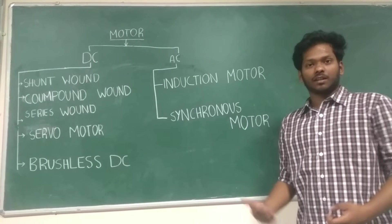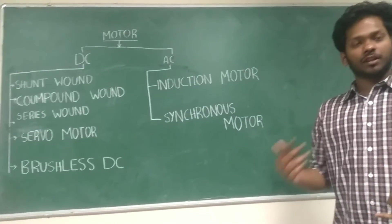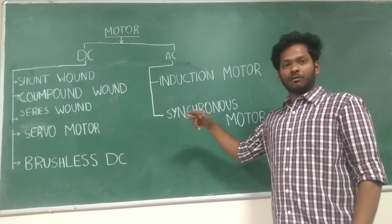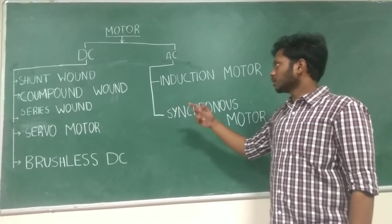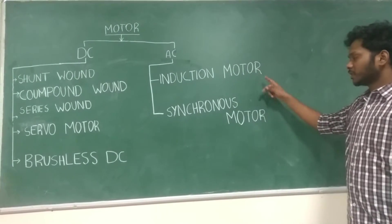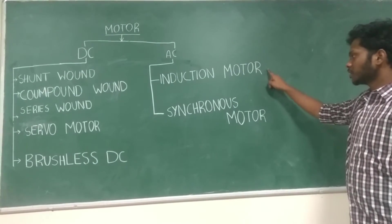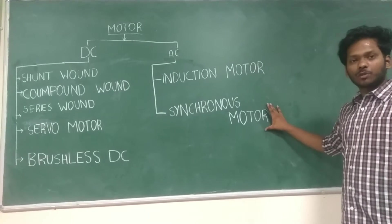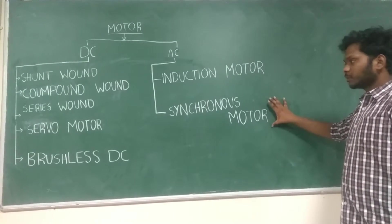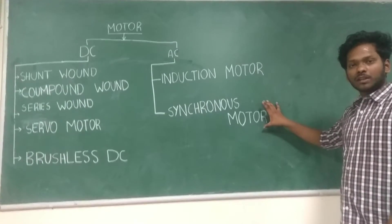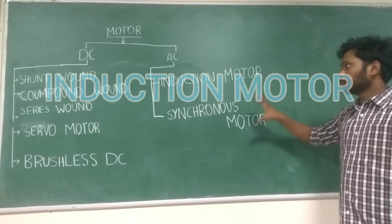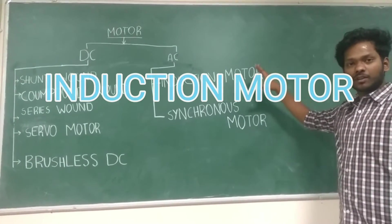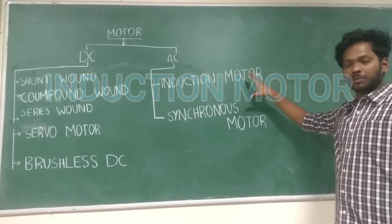We have seen the BLDC motor in DC. Now we will discuss the two types of AC motor. There are two classifications of AC motor: induction motor and synchronous motor. Synchronous motor — we call this kind of motor synchronous because they only run at synchronous speed. Whereas your induction motor will run less than your synchronous speed.